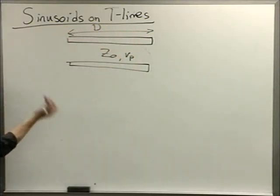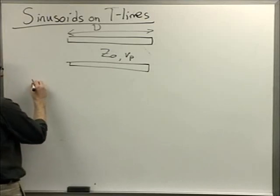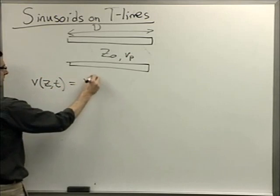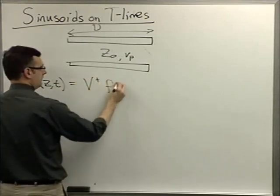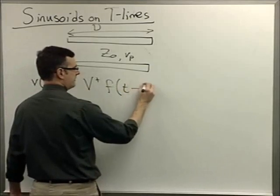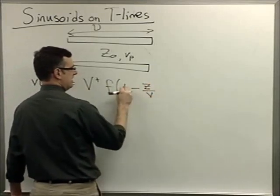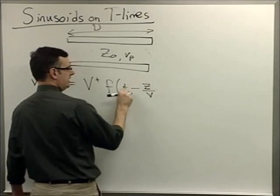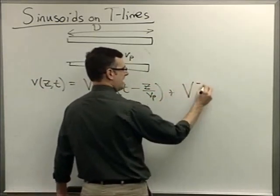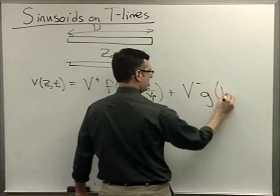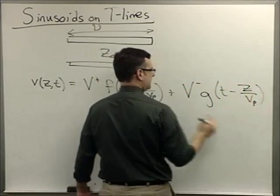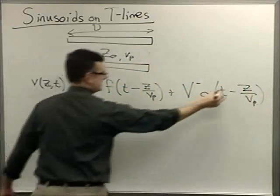And let me write the original transmission line solution based on the telegrapher's equations. Forward propagating wave, minus z, t, functional shape, t minus z over velocity of propagation. Backwards propagating wave, z over velocity of propagation. Oh, and that's got to be plus sign.